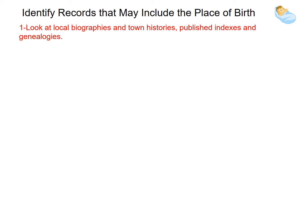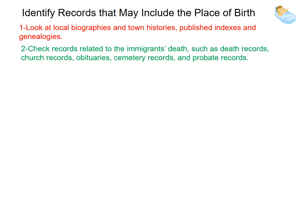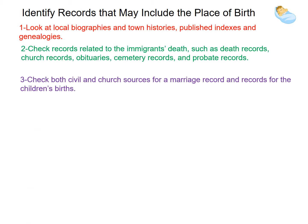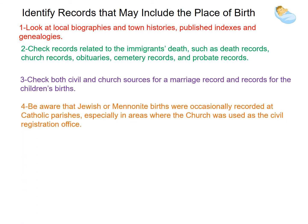Check records related to the immigrant's death, such as death records, church records, obituaries, cemetery records, and probate records. Check both civil and church sources for a marriage record and records for the children's births. Be aware Jewish or Mennonite births were occasionally recorded at Catholic parishes, especially in areas where the church was used as a civil registration office.